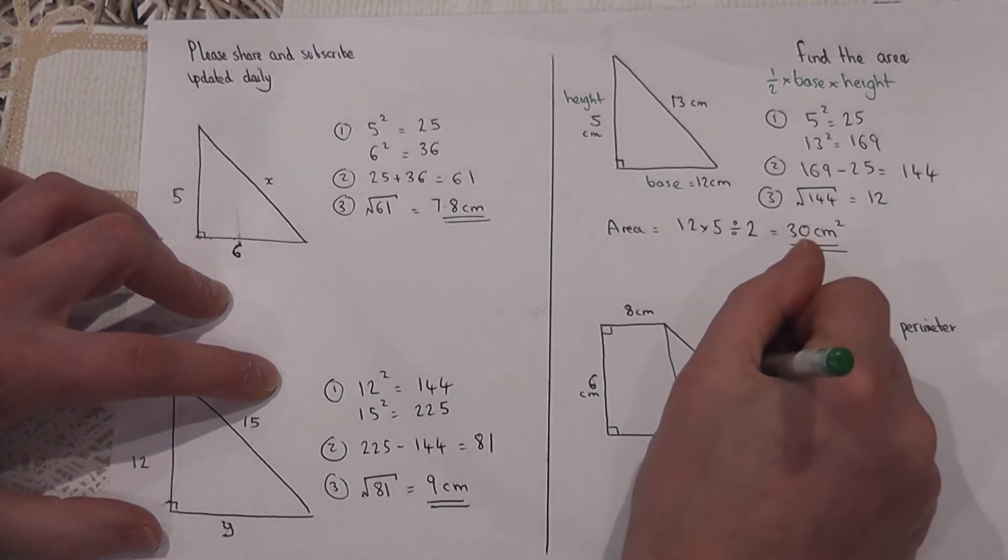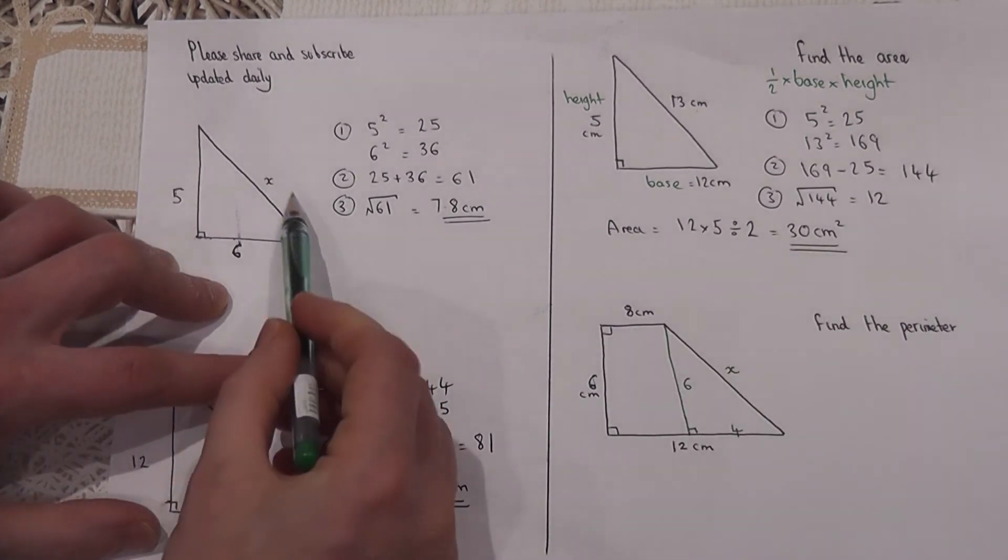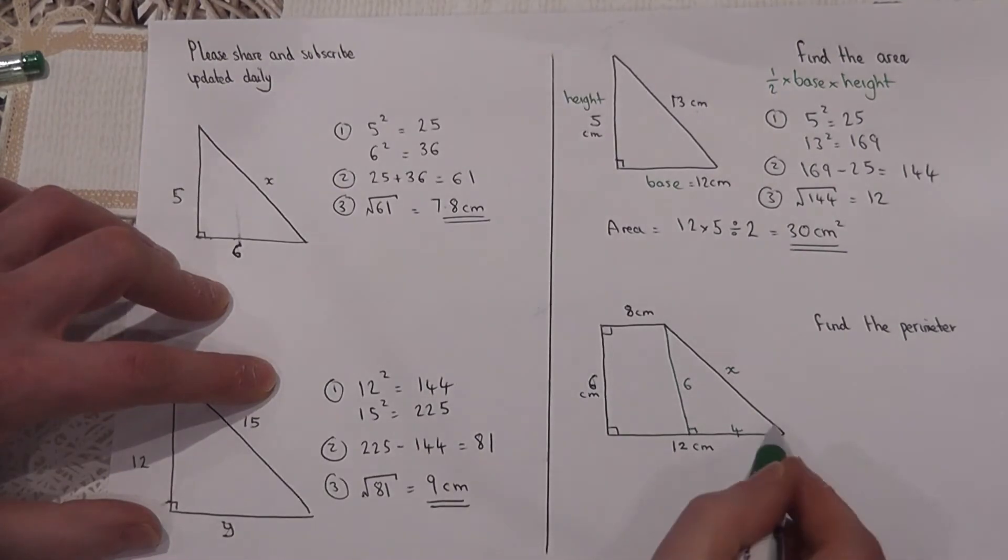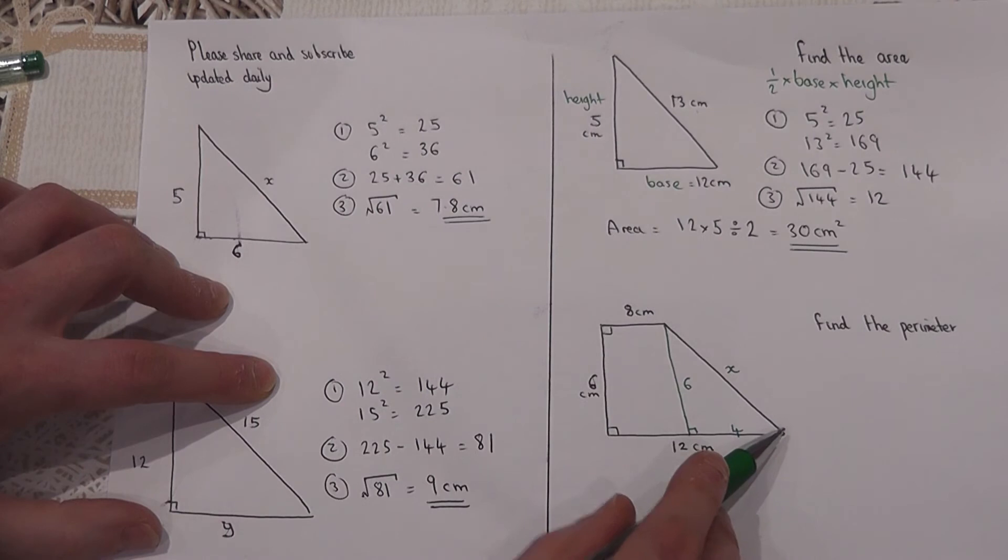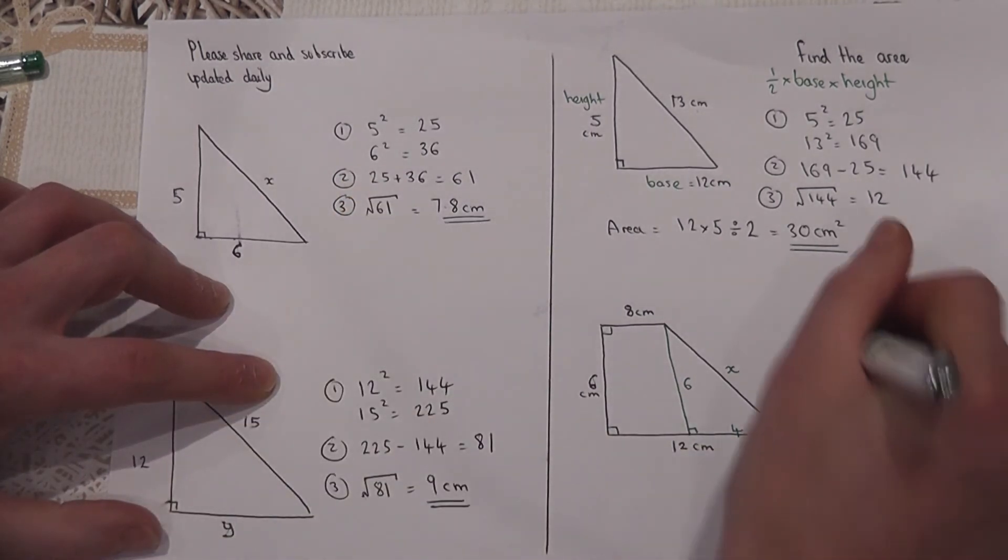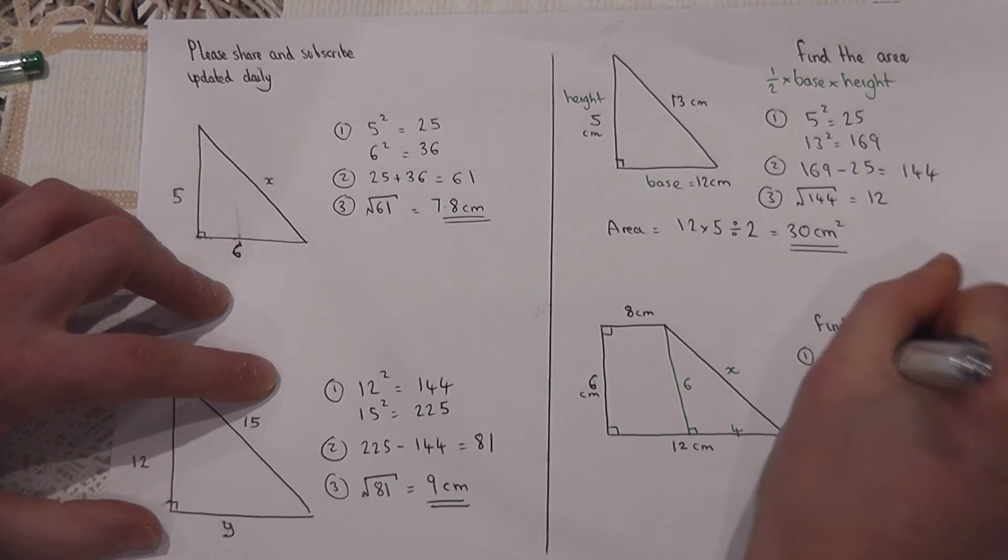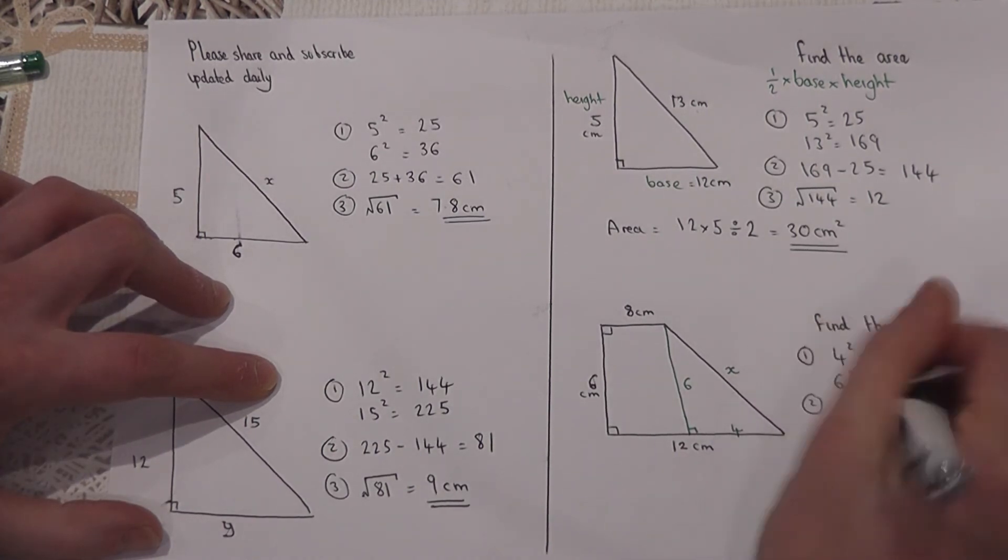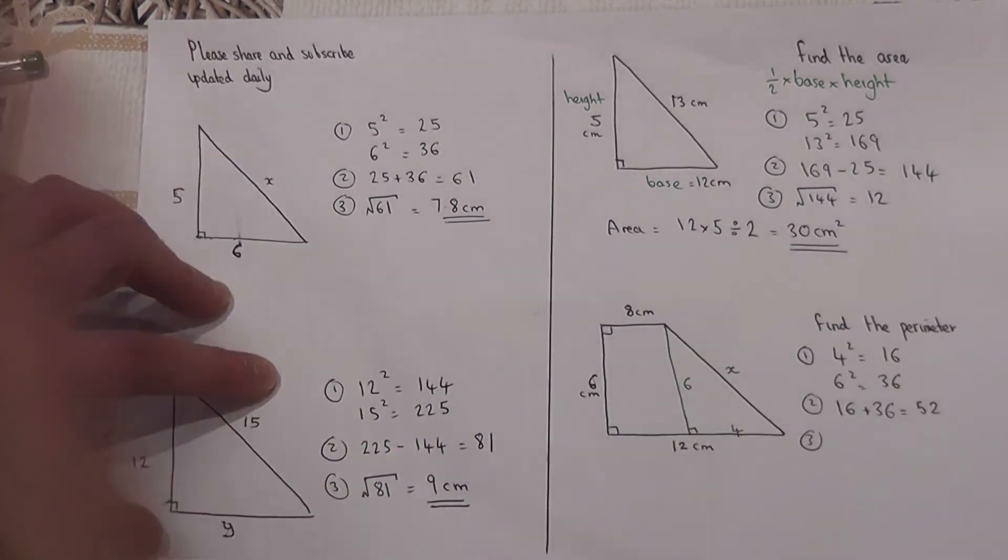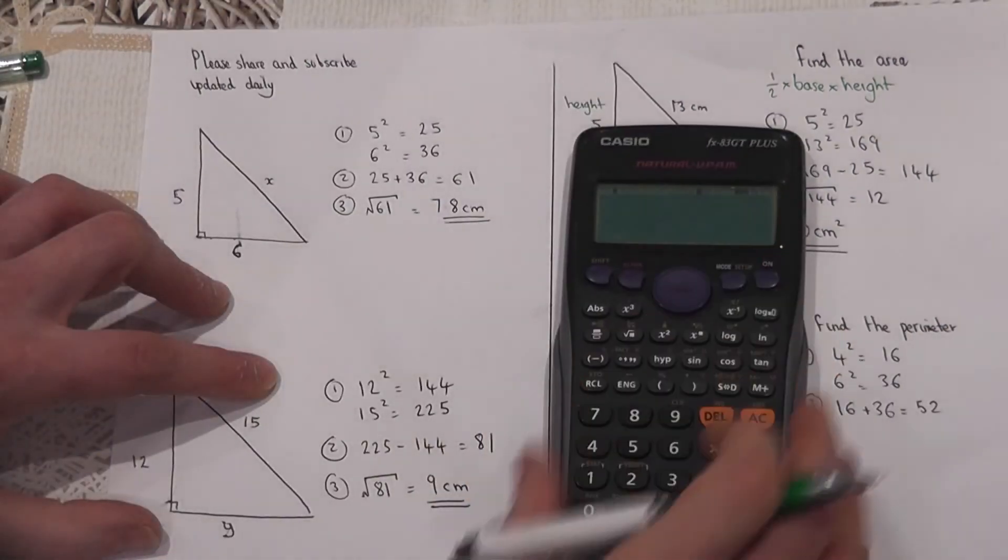To find out the hypotenuse, which I can call x, I can use Pythagoras on just this right angle triangle here. I want to find the hypotenuse, therefore it's an add example. Step one is to square the sides: 4 squared is 16, and 6 squared is 36. Then add together these values, so 16 plus 36 equals 52. To finish off I find the square root of 52.